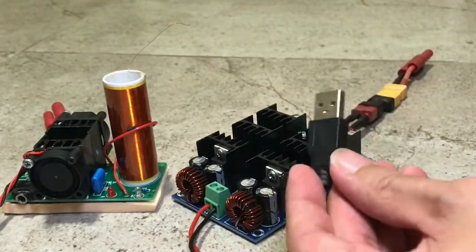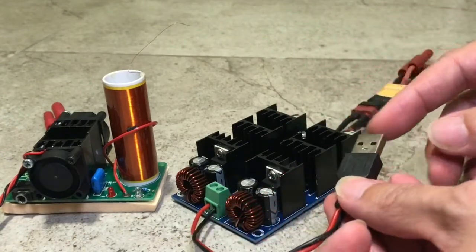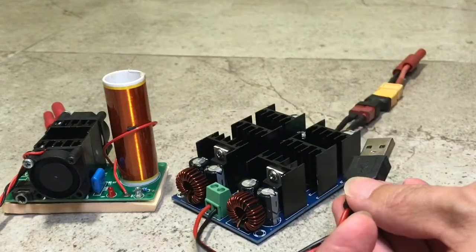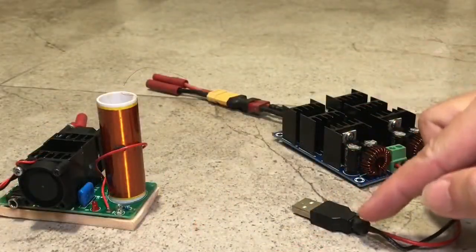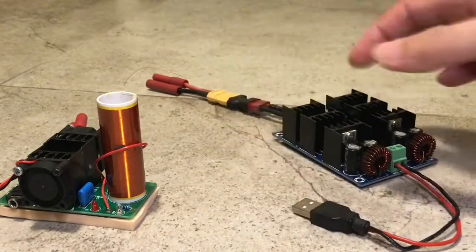So I'm hoping that if I could hook up a power bank here using this USB plug, then I could output 24V to the Tesla coil. Can this device really step up 5V from a power bank to deliver 48W of power to this Tesla coil? Let's find out.